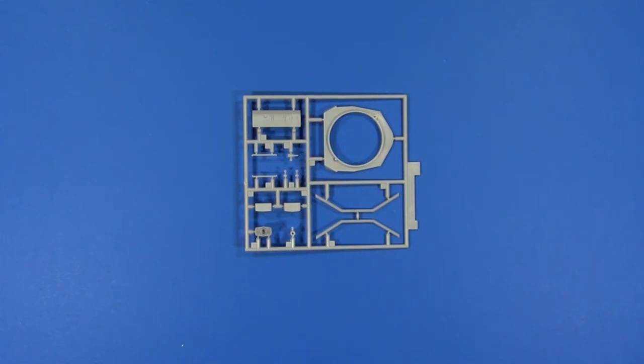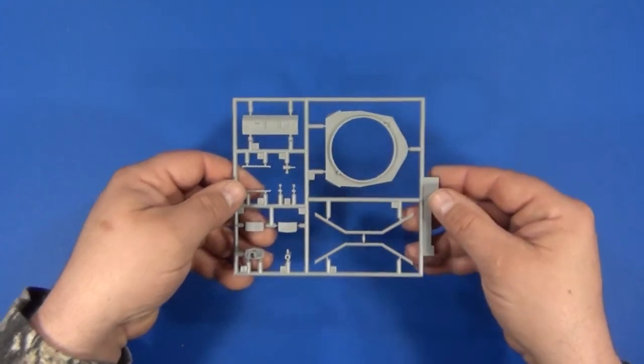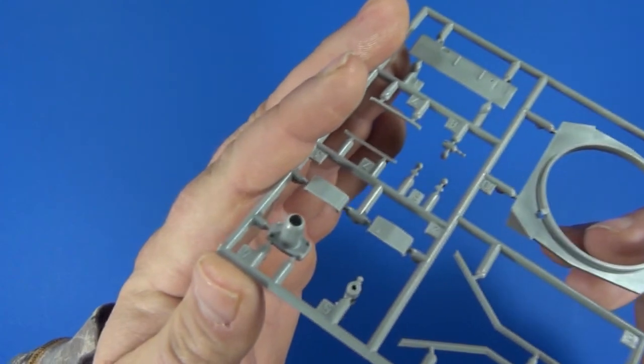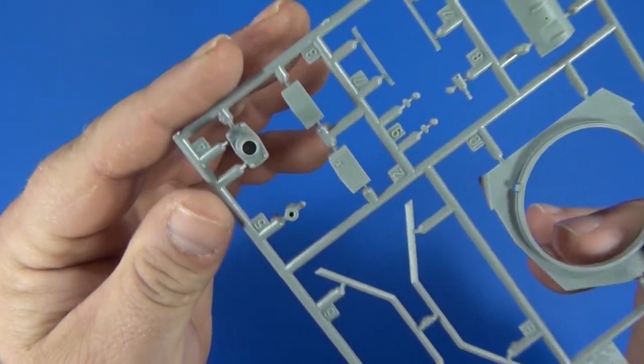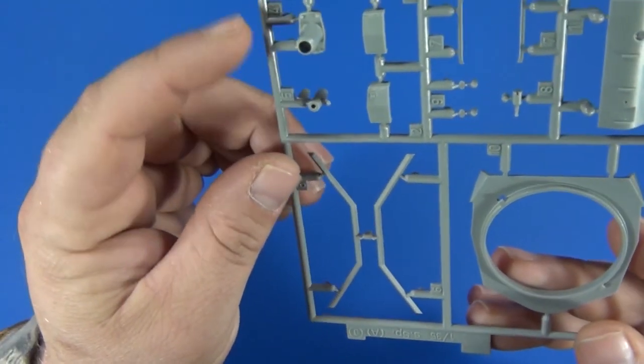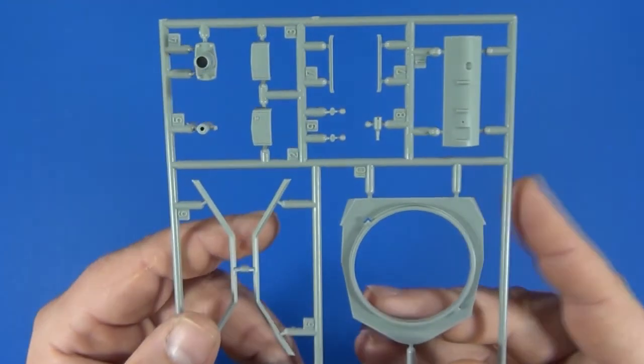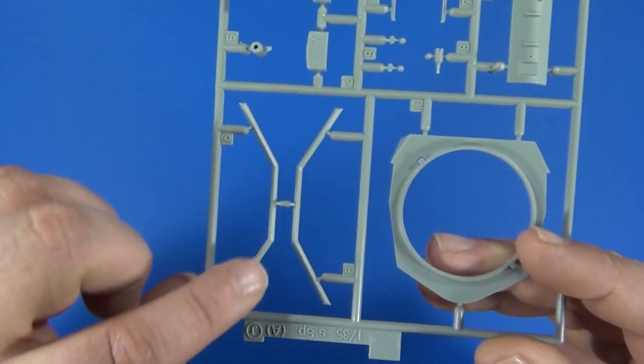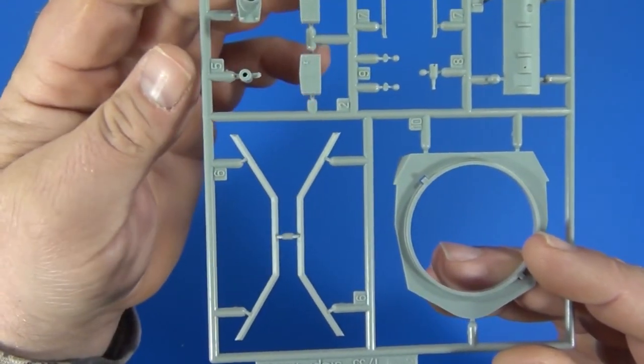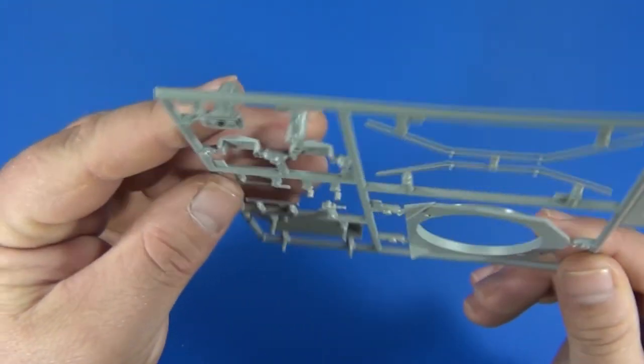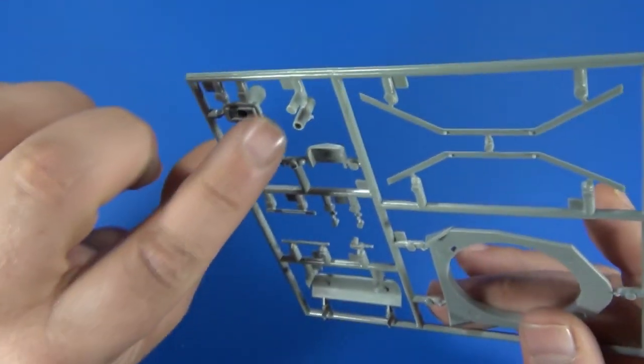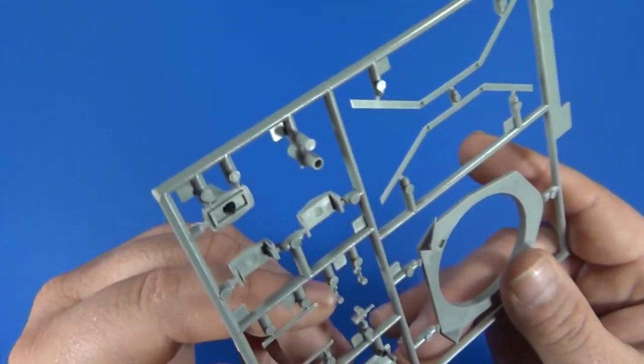This little guy here is sprue letter J. We've got some more turret components, and I believe this is the sprue that gives you the Panzer 3N gun here. And these are the bullet splash guards to protect the turret ring. The barrel is molded in one piece, just got a little bit of cleanup to do on it there.